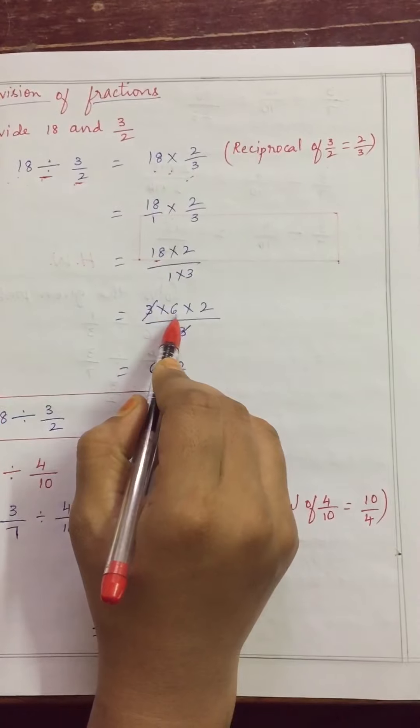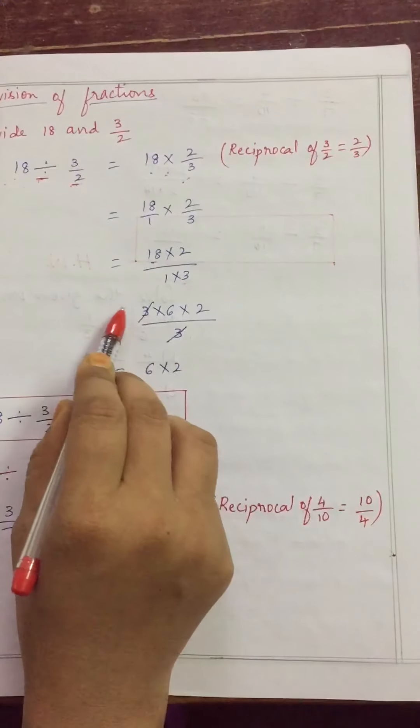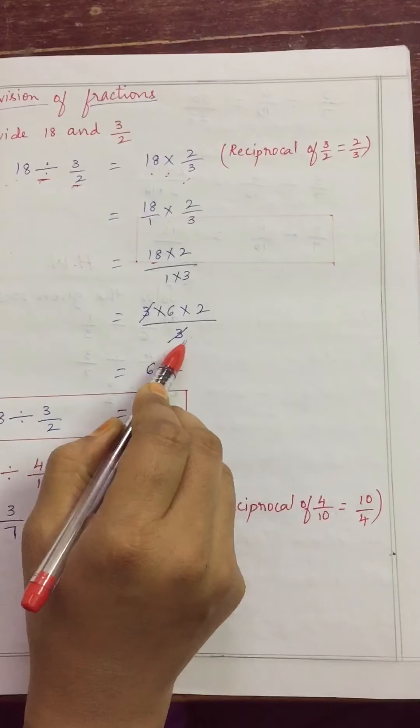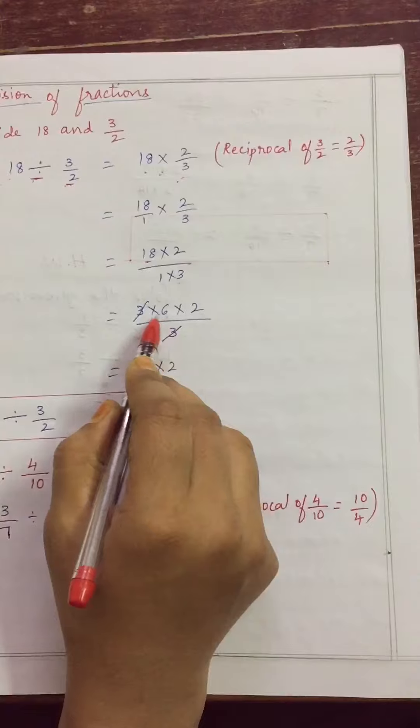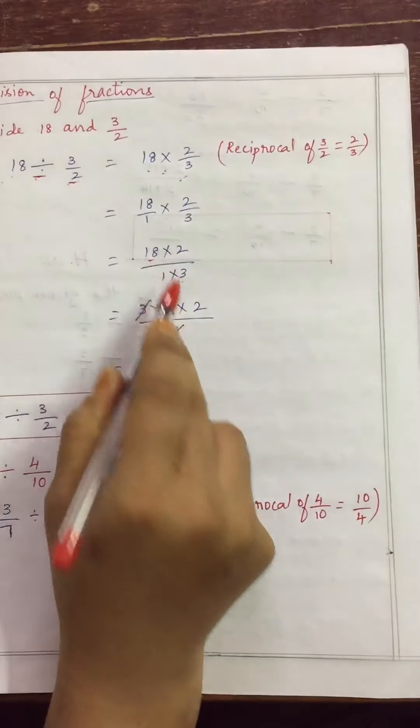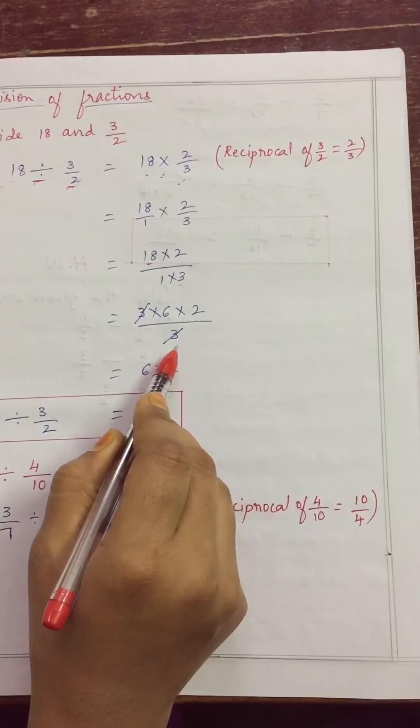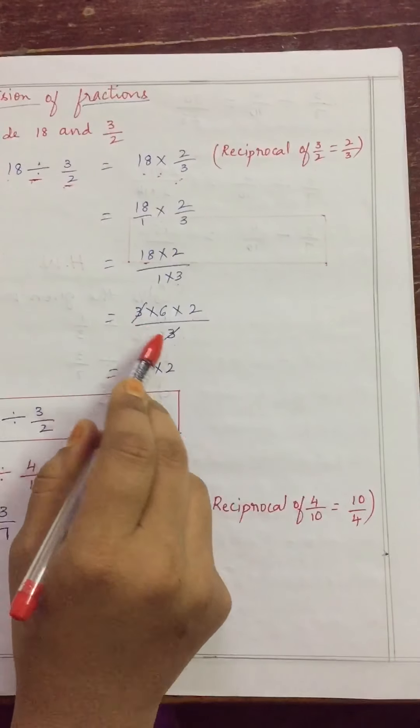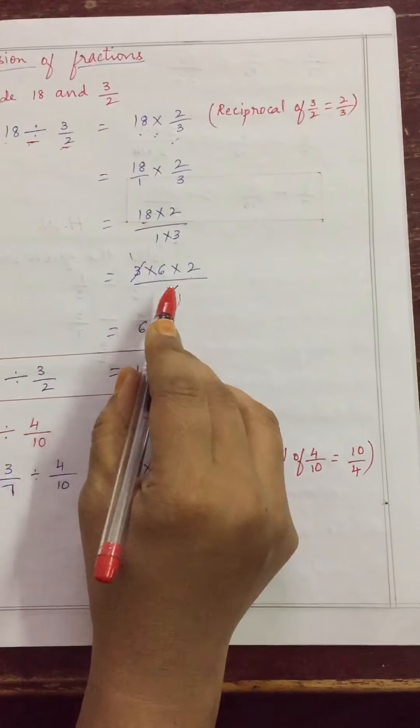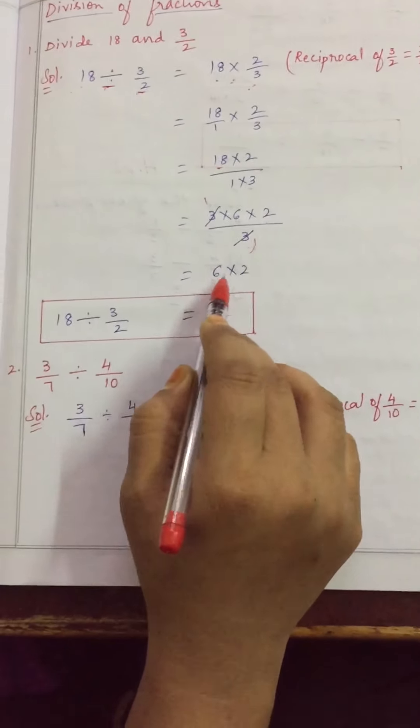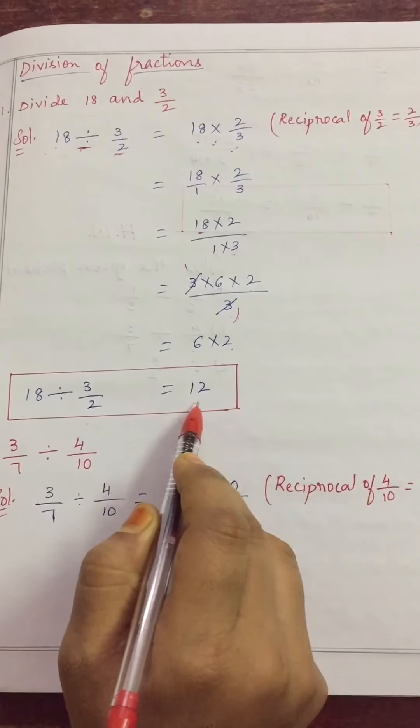So, I am writing here 3 times 6 is 18 because in denominator 3 is there I can cancel same number from numerator and denominator. That's why 18 I am writing as 3 into 6. 3 times 6 is 18 into this 2 as it is. Now, numerator 3 and denominator 3 same number is there. We can cancel it. I am cancelling here. So, remaining number is 6 into 2. 6 times 2 is 12. So, 18 divided by 3 by 2 answer is 12.